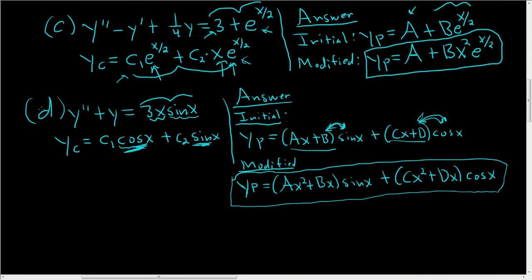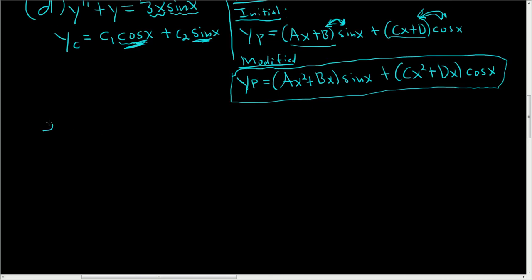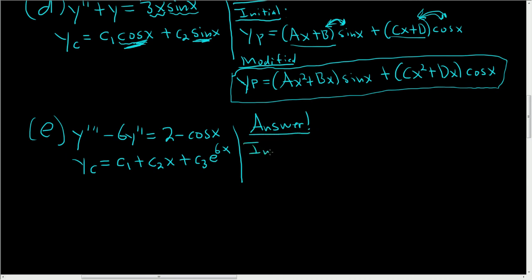Let's do one more. Let's try y triple prime minus 6y double prime equals 2 minus cosine x. In this case, via some mathematical magic, the homogeneous solution is c sub 1 plus c sub 2 times x plus c sub 3 times e to the 6x. So what's the answer to this question? The answer is to find the form of yp.